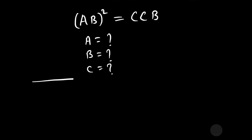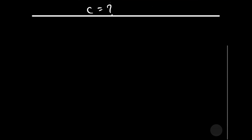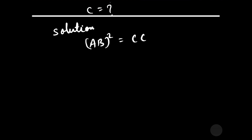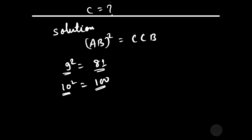Let us start solving this question. AB is a two-digit number and CCB is a three-digit number. By observing this question, we can say that after squaring a two-digit number we will have a three-digit number. Let us find those two-digit numbers which give only a three-digit number after squaring. If you square 9, you get 81, which is a two-digit number. The smallest number is 10; after squaring you get 100, which is a three-digit number. So the smallest value of AB is 10.